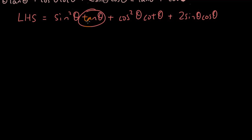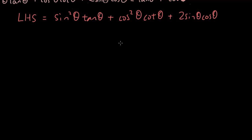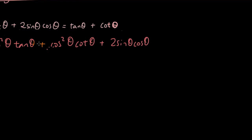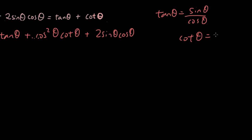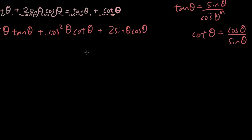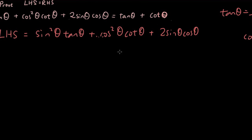Tip number two is to change everything to just sine and cosine. For example, tangent is equal to sine over cosine, and cotangent is equal to cosine theta over sine theta.